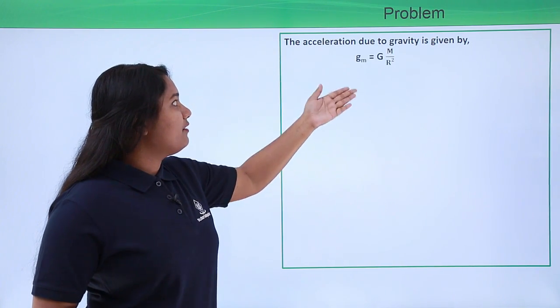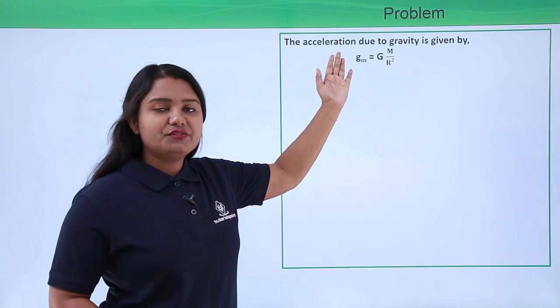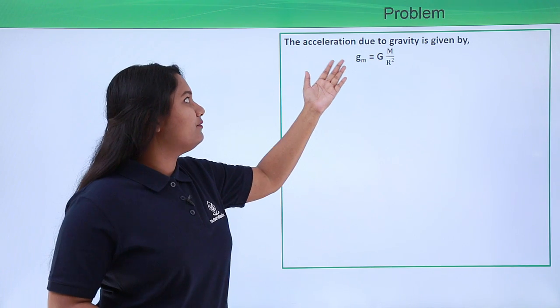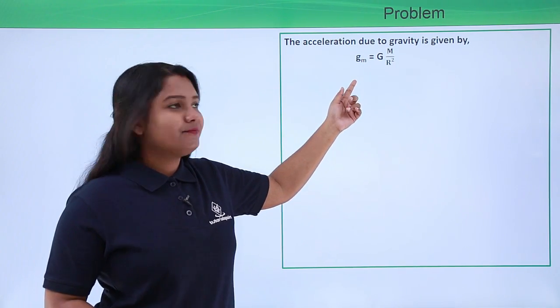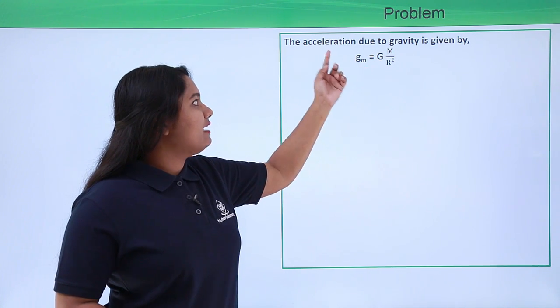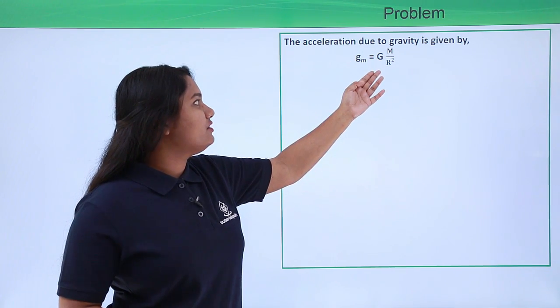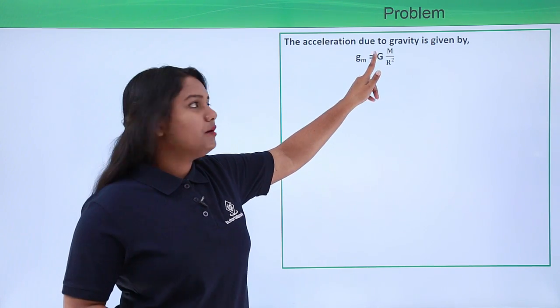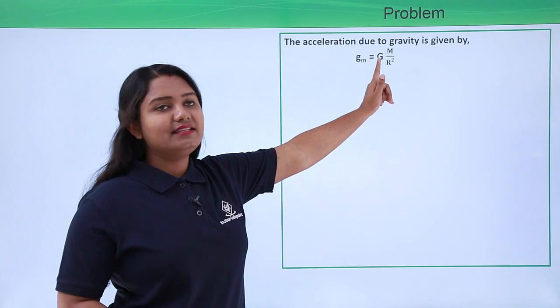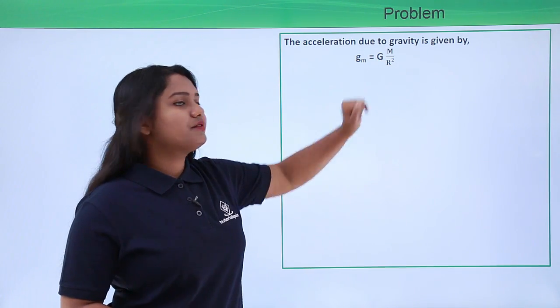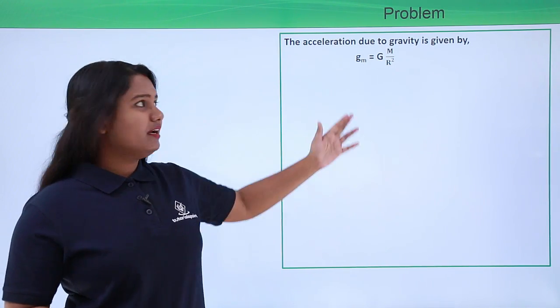Now the acceleration due to gravity is given by this formula which we have derived in the video where we have talked about acceleration due to gravity, which is g equals G (the universal gravitational constant) multiplied by mass of the object divided by its radius squared, r².